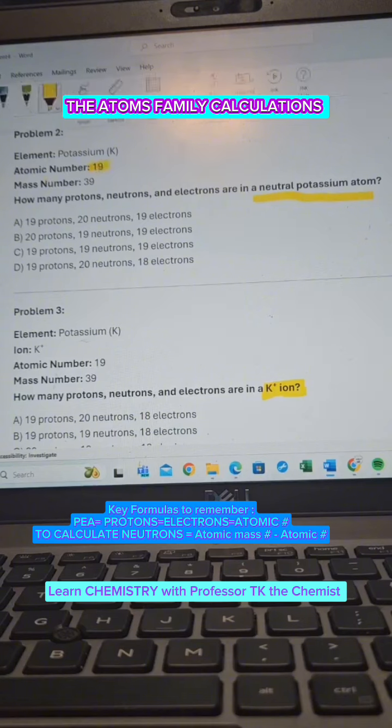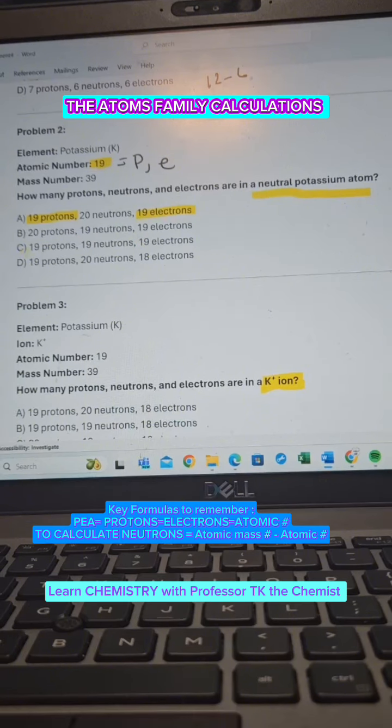That means we need to look for 19 two times within the answer. So I know that 19 protons, 19 electrons is in letter A. 19 protons and 19 electrons also in letter C, but only one of those answers is correct.